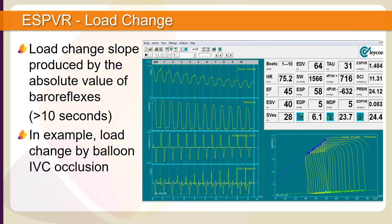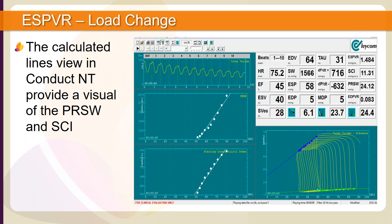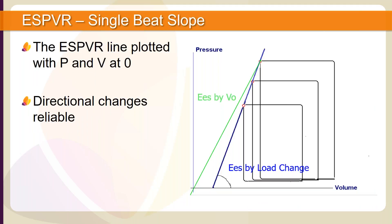The decrease in volume and pressure is also evident in the total volume and pressure waveforms. Load independent indices can be estimated without load changes from a single beat and monitored continuously. When performing load changes is not possible, the ESPVR line can be plotted by connecting the end-systolic points with x and y intercept at zero, as seen on the green line intercepting zero and the end-systolic point.